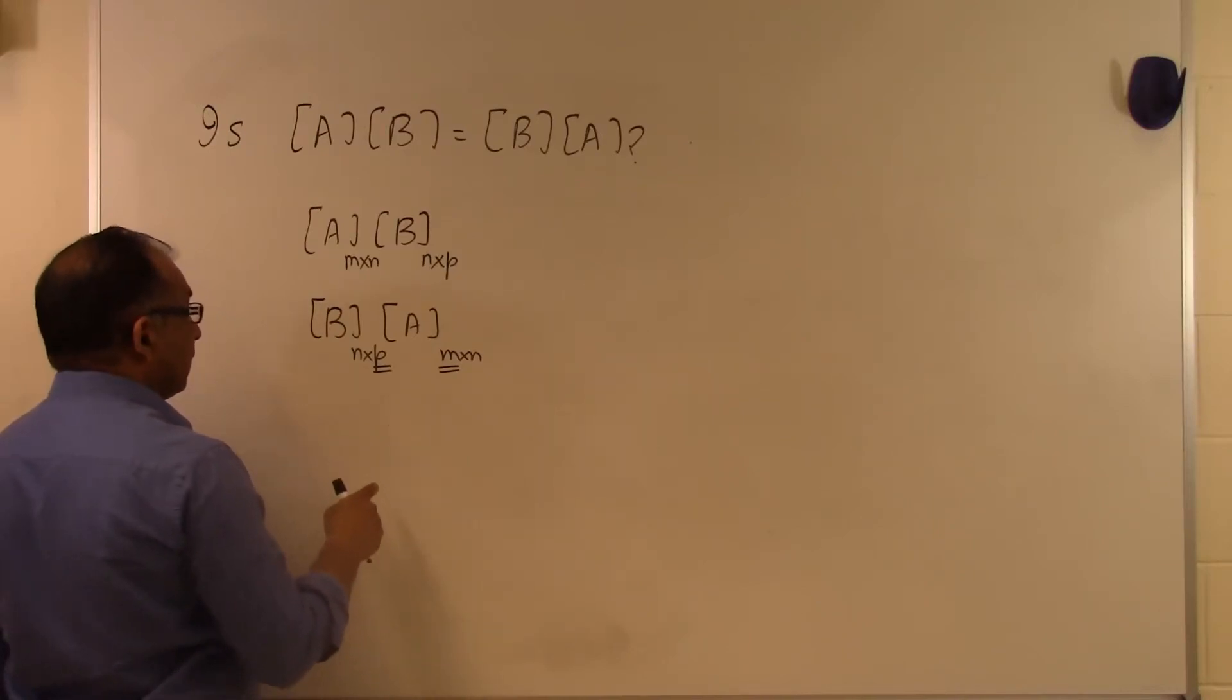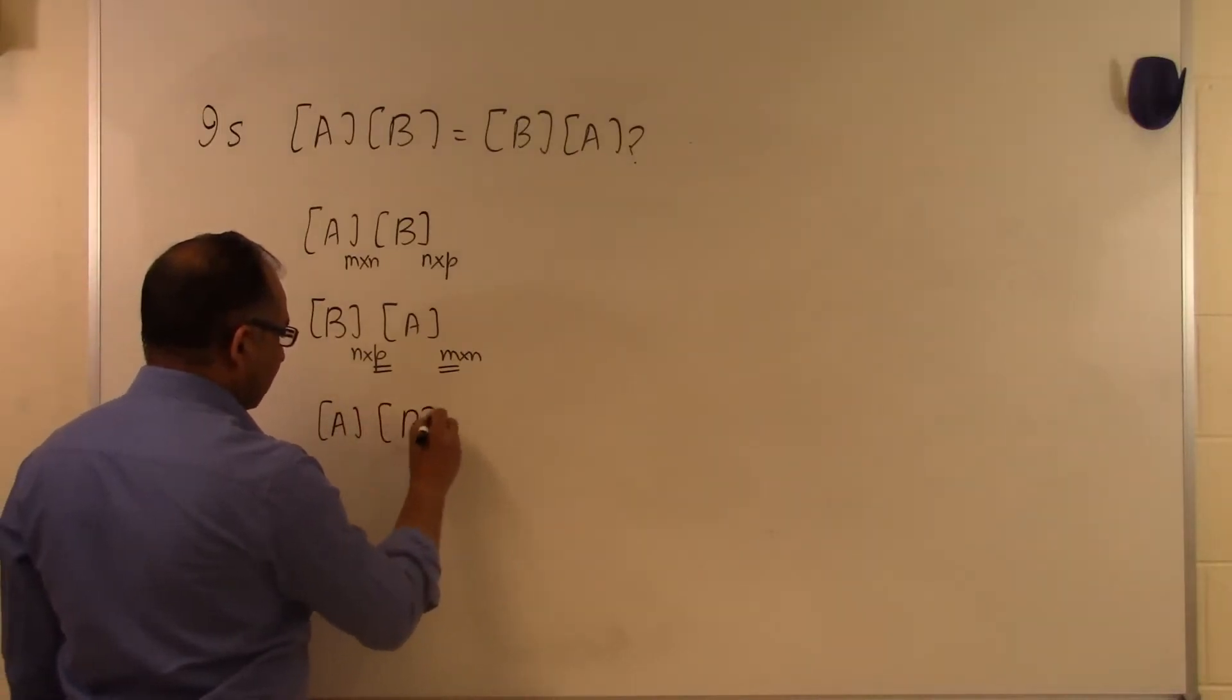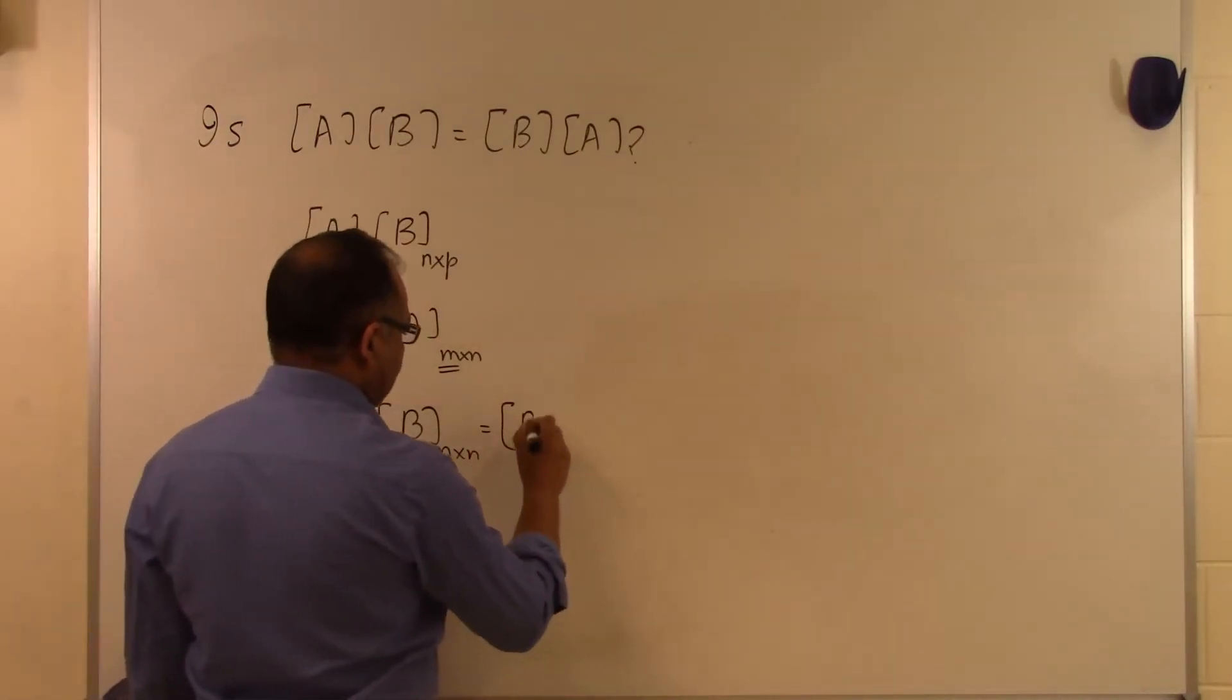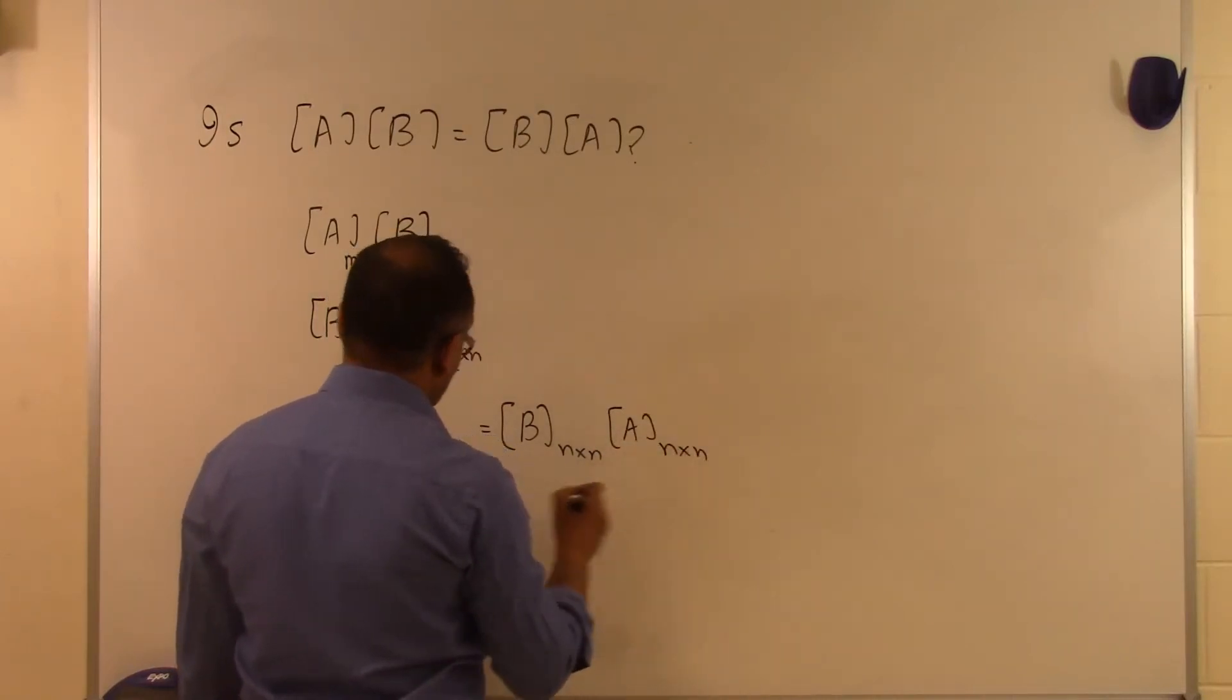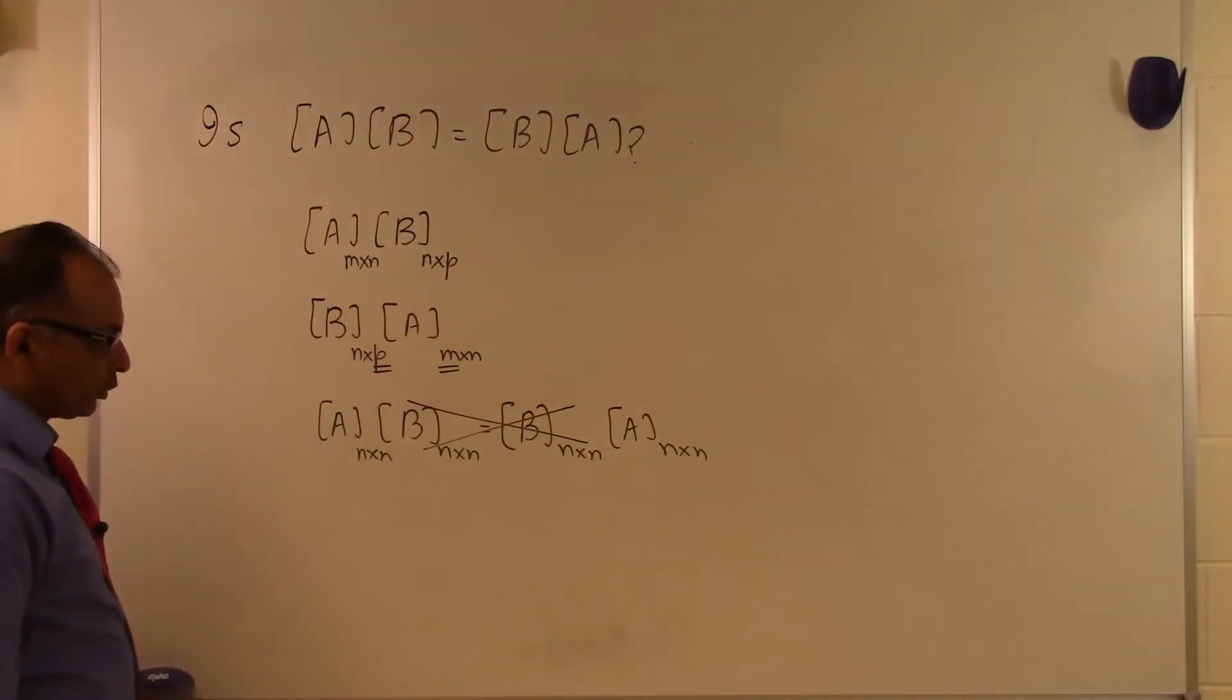Even then, if you have two squared matrices of the same size, N by N, is this true? No, this is not generally true. Even if you have two matrices that are square and of the same size, the commutative law of multiplication is not valid.